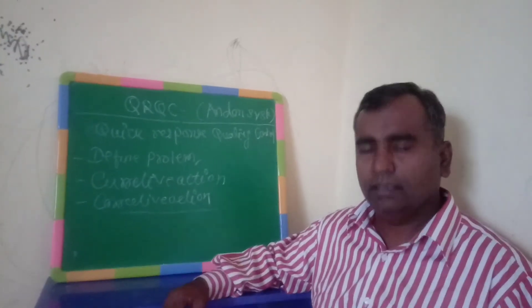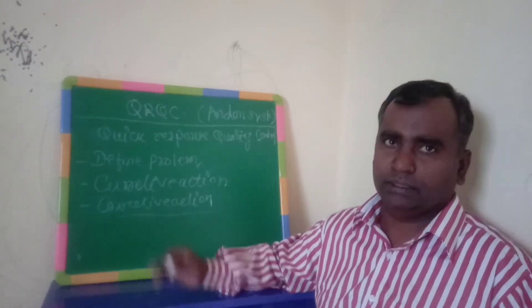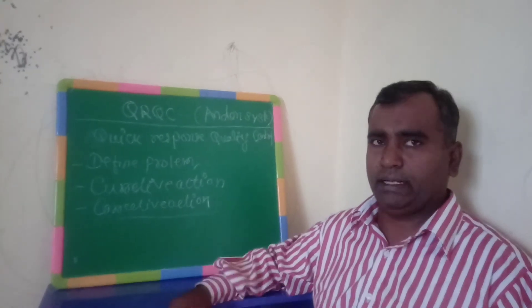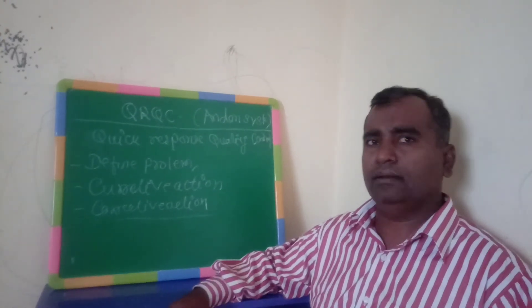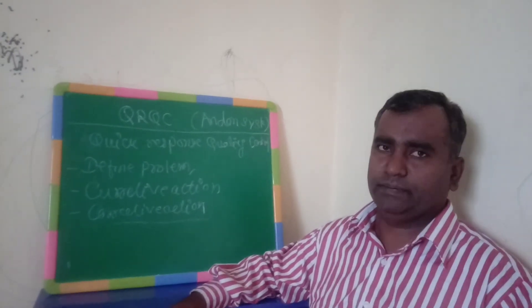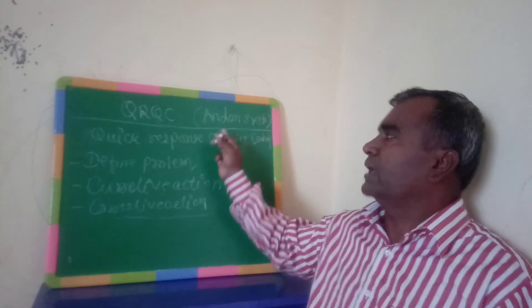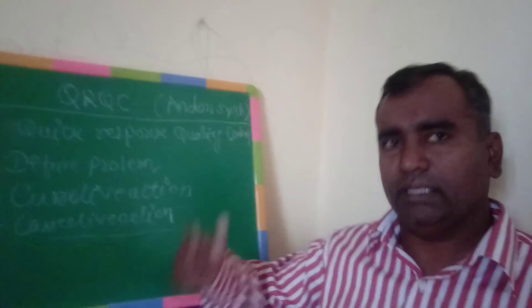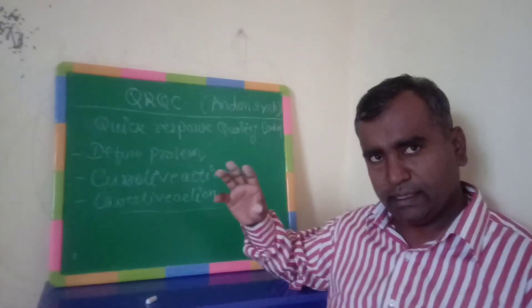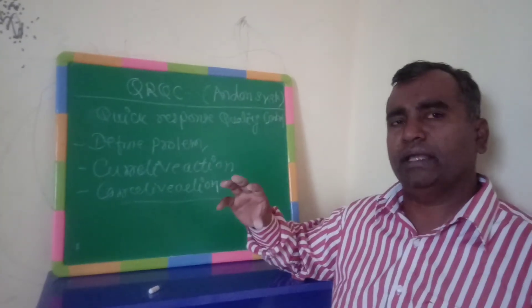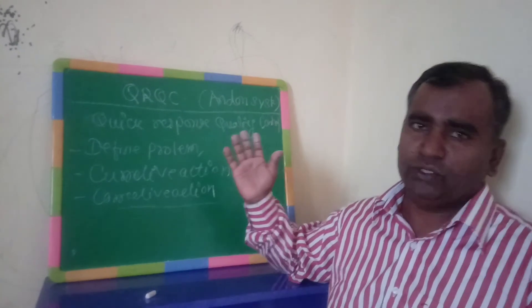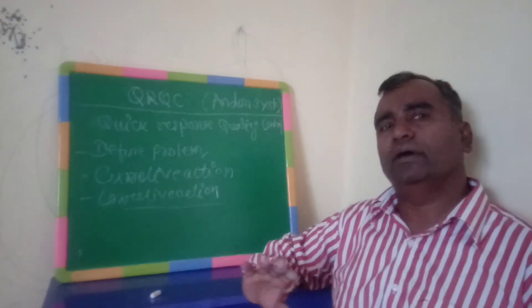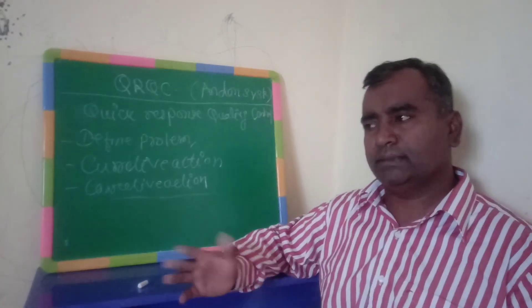The same thing happens in the andon system. In the andon system, there is a line-based system. There is an indicator given for each operator — they push the button, immediately the indicator shows on which line and what issue is happening, the supervisor immediately comes, resolves the problem, sets back materials, continues the line, and avoids line losses. I hope you understand the meaning of Quick Response Quality Control.